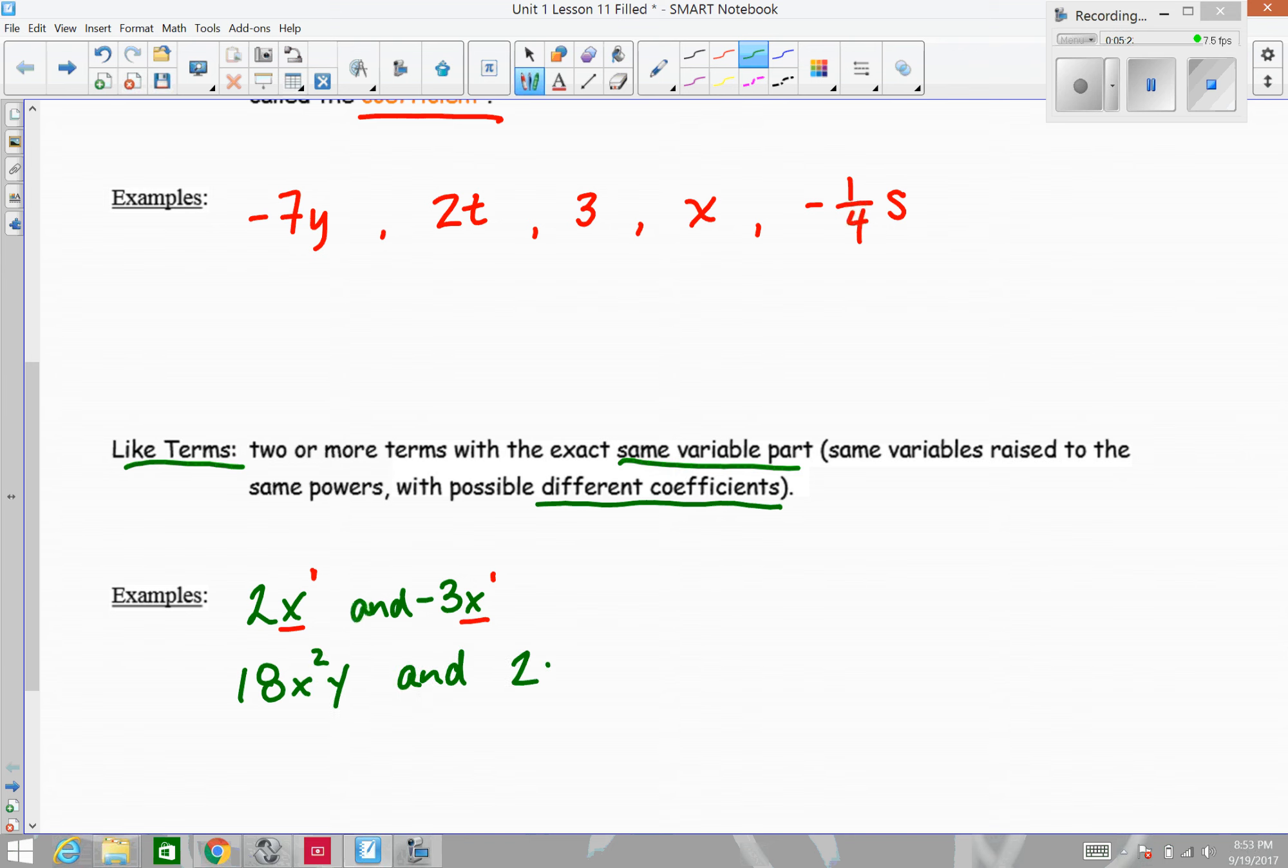Examples of non-like terms. Something like 18x squared y and 2xy squared. Although both of these have an x and a y term, they do not have the same exponents. The y is understood to have an exponent of 1. In the second term here, x has an exponent of 1 and y has an exponent of 2. So those are not like terms.